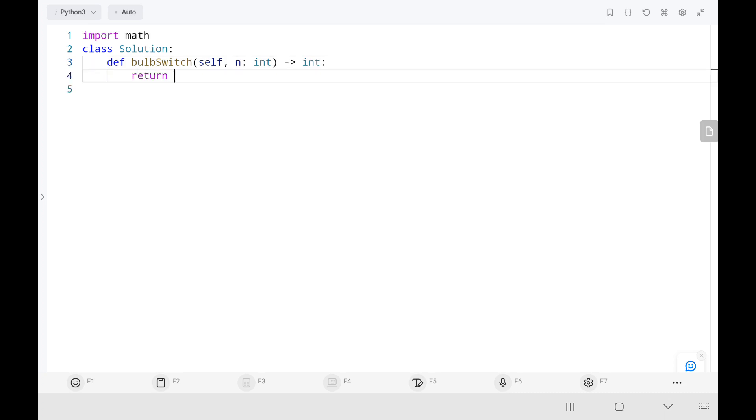Basically, we're just going to return the square root of n. That's all the code is. Now we'll run the code.